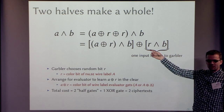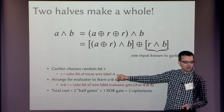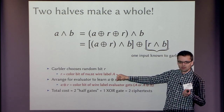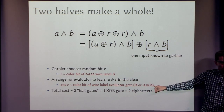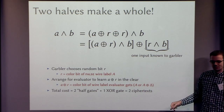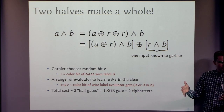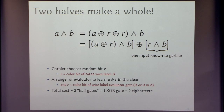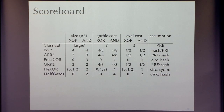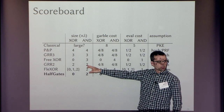Where does R come from? It's basically free — if R is the color bit of the false label for wire B, the garbler knows the color-to-truth-value association and the evaluator knows their own color bit. Those two pieces are a secret share of the truth value. Collapsing everything together in terms of the color bits on the wires gives an AND gate costing two ciphertexts, fully compatible with free XOR. The assumption is exactly the same as free XOR.